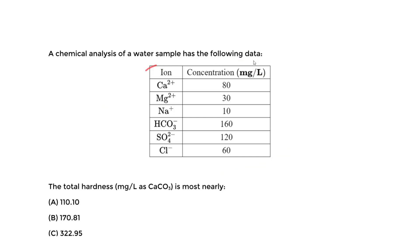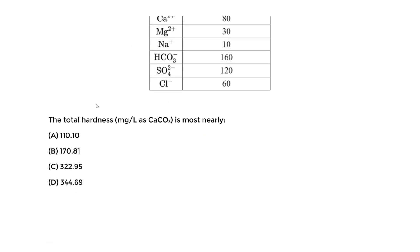We're given the ions and the concentration when we measure that. We want to find the total hardness in units of mg per liter as calcium carbonate. These are the units we always use for hardness and alkalinity as well.